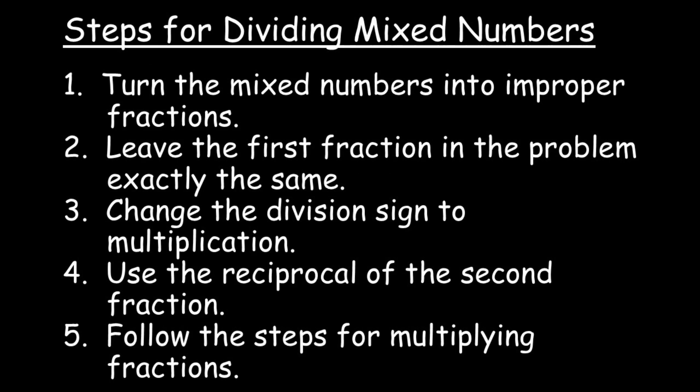First, we'll need to turn any mixed number in the problem into an improper fraction. Remember, whole numbers also need to be in fraction form. Then, we'll keep the first fraction in the problem exactly the same. We'll change the division sign to multiplication and multiply by the reciprocal of the second fraction.